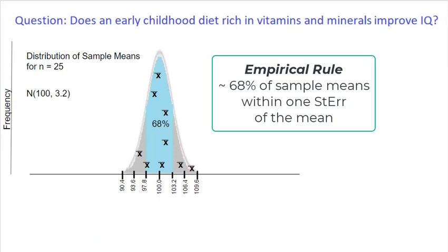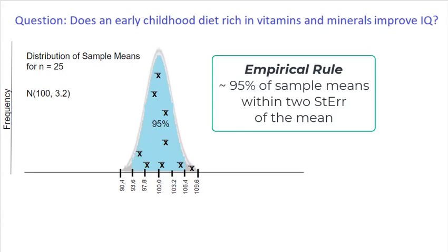We can apply the empirical rule to this distribution of sample means, just like we could to a set of individual scores. We know that 68% of sample means, for samples of size 25, will be within plus or minus one standard error of 100. That means 68% of all sample means will be between 97.8 and 103.2. Likewise, 95% of all sample means will be within two standard errors of the population mean of 100 — between 93.6 and 106.4.